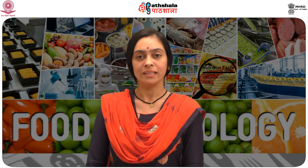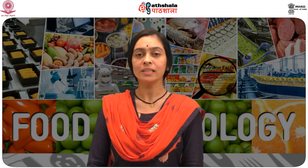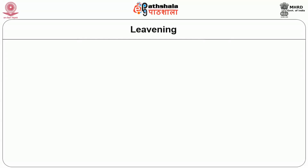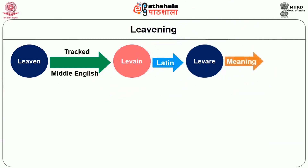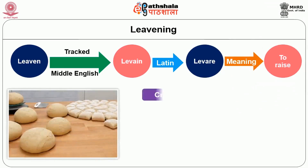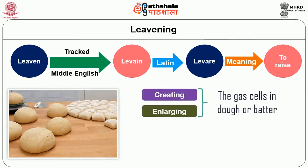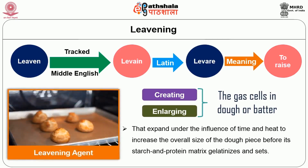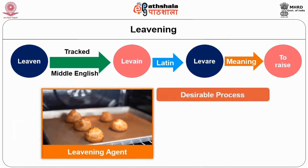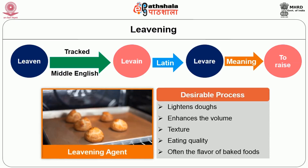We will know about the different leavening processes and leavening agents. The word 'leaven' can be tracked through Middle English to the Latin 'levare', meaning to raise. The process of leavening involves creating and enlarging gases in dough or batter that expand under the influence of time and heat to increase the overall size of the dough piece before its starch and protein matrix gelatinizes and sets. Any material which brings about this process is called a leavening agent. It is a desirable process that lightens the dough, enhances the volume, texture, eating quality, and often the flavor of baked foods.